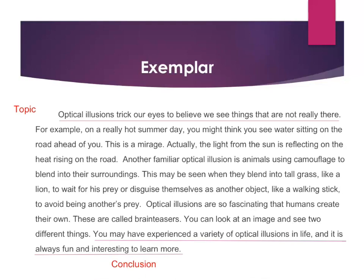The next thing I wanted to include in my good summary were those key details and examples from the text. I mentioned the hot summer day being a mirage on the road, another one being the animals that camouflage or blend in with their surroundings, and last, I talked about those human-made brain teasers. I made sure to try to elaborate and explain in my own words so as not to copy straight from the text. I also wanted to use key vocabulary words mentioned in the text — like referencing blending in with the grass as camouflage, because I've learned that previously.